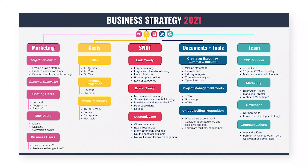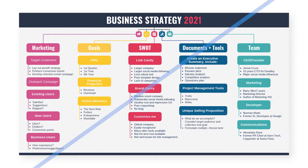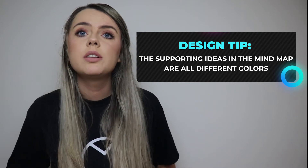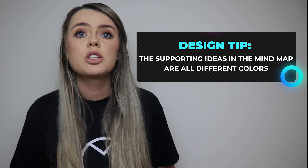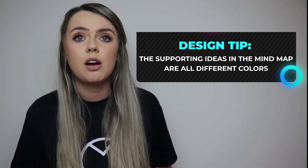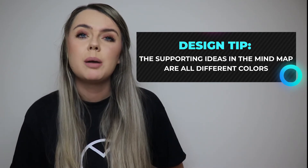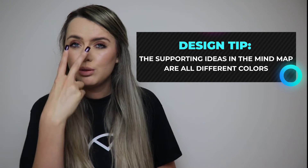The following strategic planning map template takes into account the internal team, customers, KPIs, and what tools they'll use to reach their goals. Design tip: the supporting ideas in the mind map are all different colors, which helps them stand out from one another and makes the mind map easier to scan.